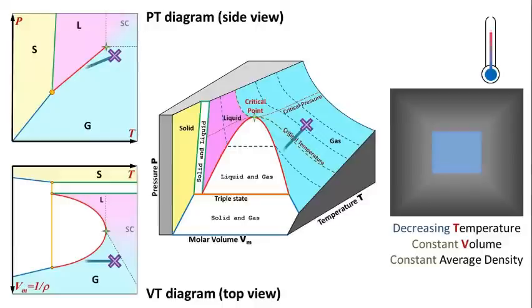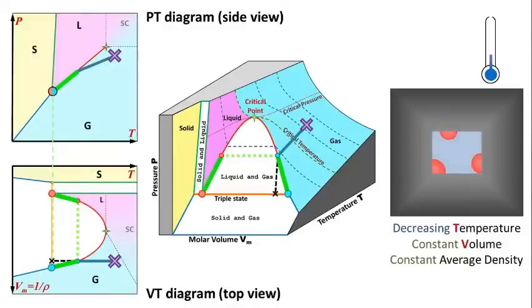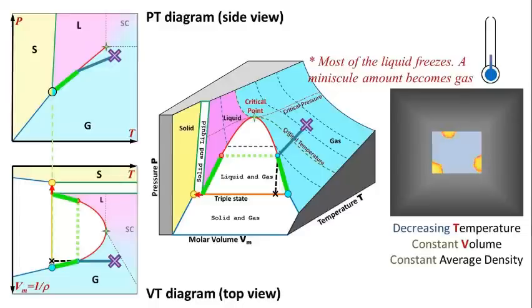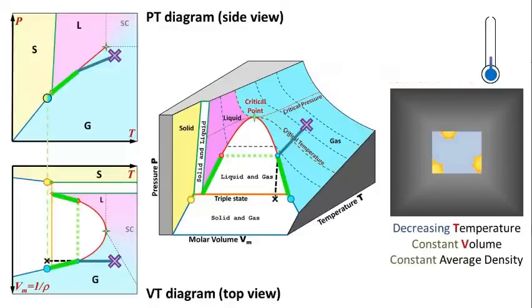But this time things are a bit more complicated. As we continue to decrease the temperature, these two points, representing the densities of coexisting gas and liquid phases, trace the borders of the gap. The density of the gas decreases, the density of the liquid increases, and the relative amounts of the two phases changes continuously until we cross the triple point, where almost all of the liquid freezes solid. From here on, it's only gas and solid coexisting in the chamber.